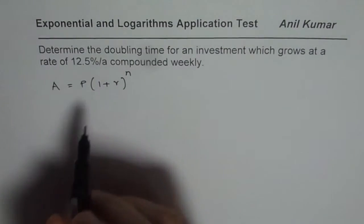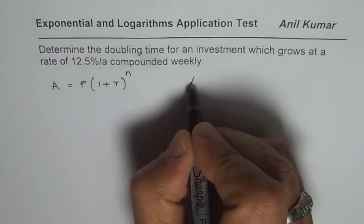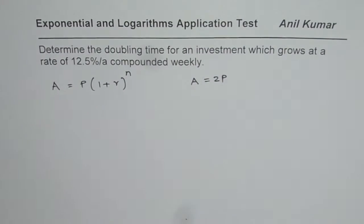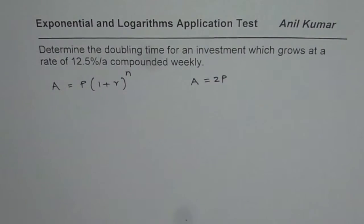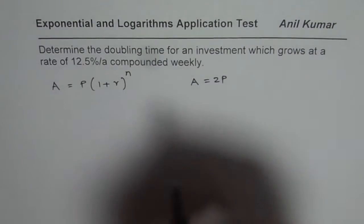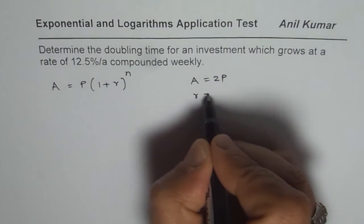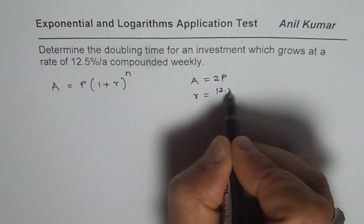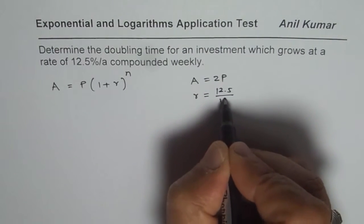In this particular equation, what we are given here is that doubling means A is equal to 2 times principal amount, that becomes doubling. And rate of interest R is given to us as 12.5%, means 12.5 out of 100.